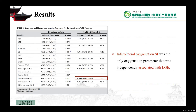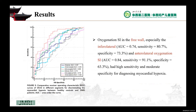Furthermore, multivariate regression analysis showed that inferior lateral oxygenation SI was the only oxygenation parameter independently associated with LGE. Oxygenation SI in the free wall, especially the inferior lateral and anterior lateral segments, had high sensitivity and moderate specificity for diagnosing myocardial hypoxia by ROC analysis.